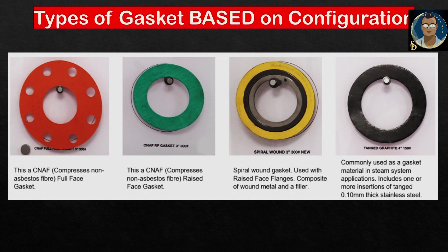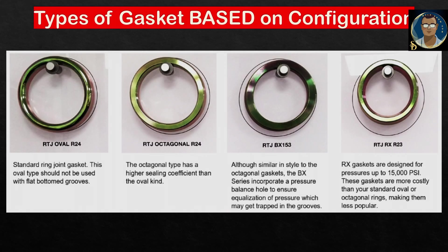Here is a selection of commonly used gasket types in the oil and gas, petrochemical, and power generation industries. The photos are for your convenience and information. You can see specific RTJ (ring type joint) gasket configurations: RTJ Oval R24 — ring number 24, standard ring joint gasket; this oval type should not be used with flat-bottom grooves. RTJ Octagonal R24 — the octagonal type has a higher sealing coefficient than the oval kind. RTJ BX-153 — similar in style to the octagonal gasket but incorporates a pressure balance hole to ensure equalization of pressure that may get trapped in the grooves. RTJ RX R23 — designed for pressures up to 15,000 psi, though more costly than standard oval or octagonal rings.